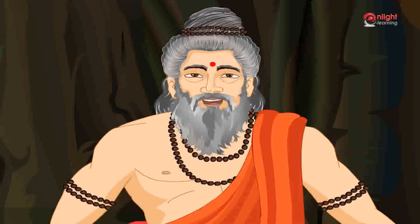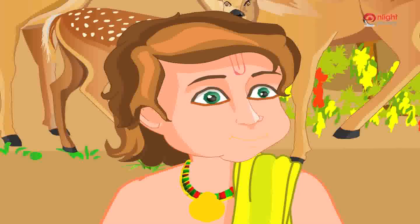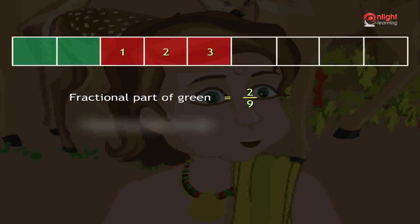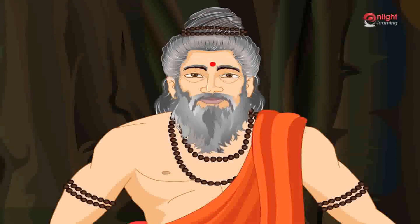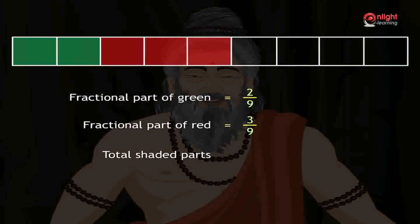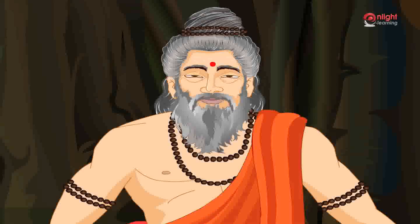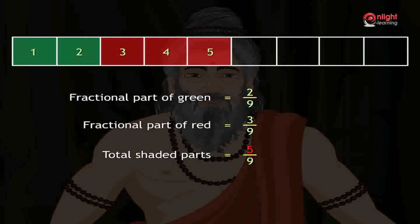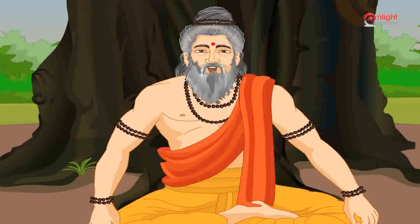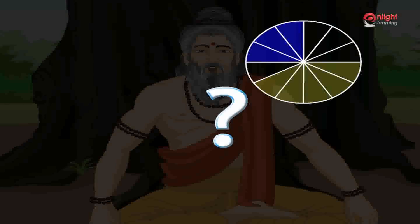Good. Now tell me the fractional part of red. Three parts out of nine parts are shaded with red. So it is three by nine. Very good children. Now can you tell me how many parts are shaded by green and red color together? Five parts out of nine parts, so it is five by nine. Very good. We get these five parts by adding only the numerator parts of the fractions two by nine and three by nine.